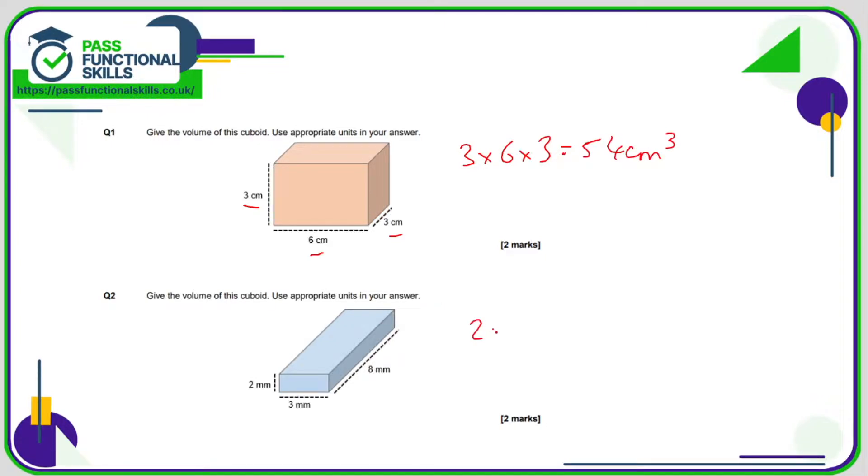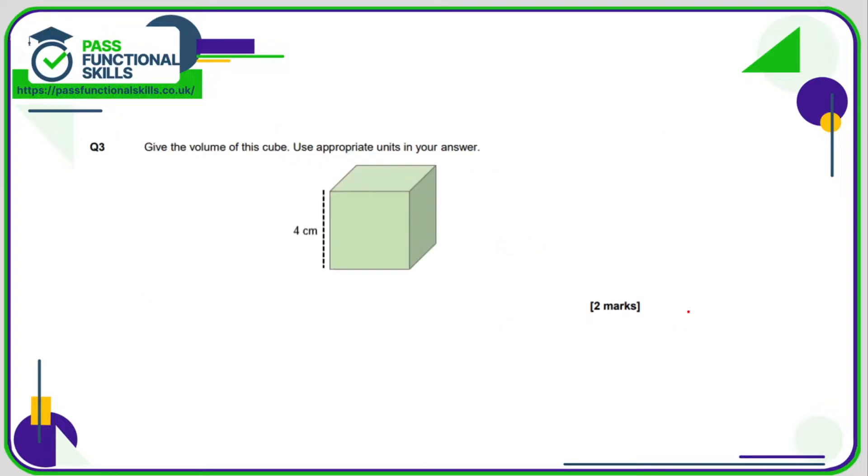For question number two, it's 2 times 3 times 8, which is 48 cubic centimeters. Question three, we're told it's a cube, so therefore all the dimensions are the same, so the calculation is 4 times 4 times 4, which is 64 cubic centimeters.